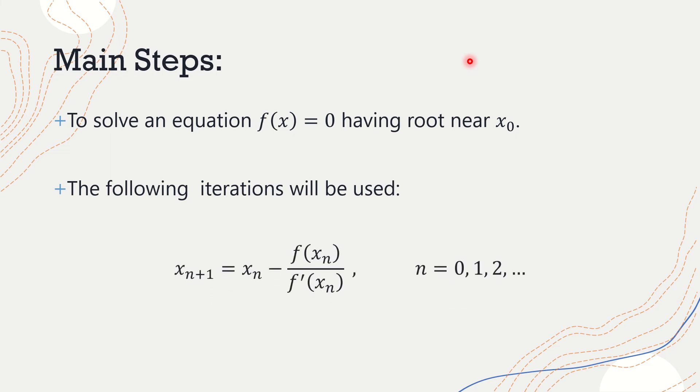So we would have this formula if we apply Taylor series, the Taylor expansion, so we can prove this formula. We're using xₙ₊₁ = xₙ - f(xₙ)/f'(xₙ) for n = 0, 1, 2, 3.